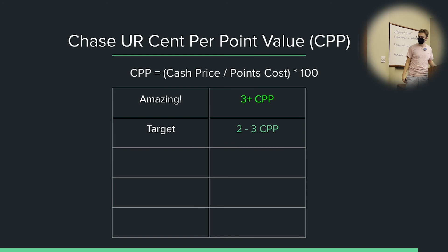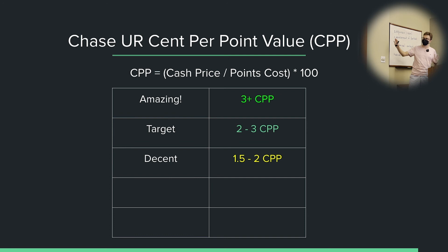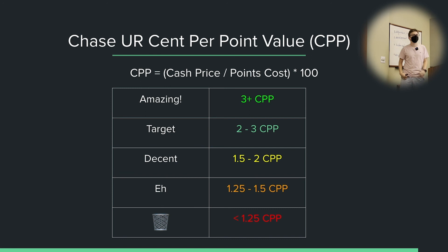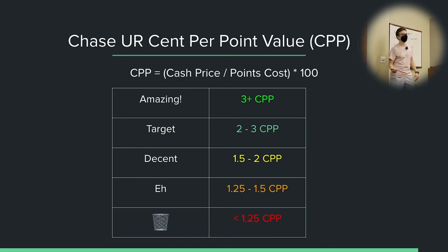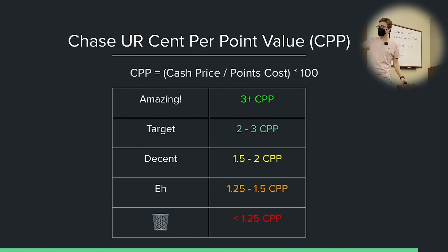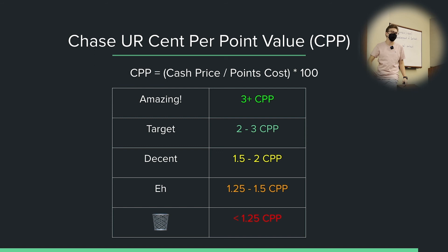Target would be 2 to 3 cents per point — still completely fine, very good. Decent is 1.5 to 2 cents per point — not that bad but it could be better. Between 1.25 and 1.5 is fine, but we want to shoot higher. If you're getting less than 1.25 cents per point, you should not be redeeming the points for travel, because when you hold the Chase Sapphire Preferred, you can book travel through Chase's portal at a rate of 1.25 cents per point. If you're getting less than that by transferring out, just book it through the portal. For me I'd say minimum 1.5, ideally 2 to 3 cents or higher.